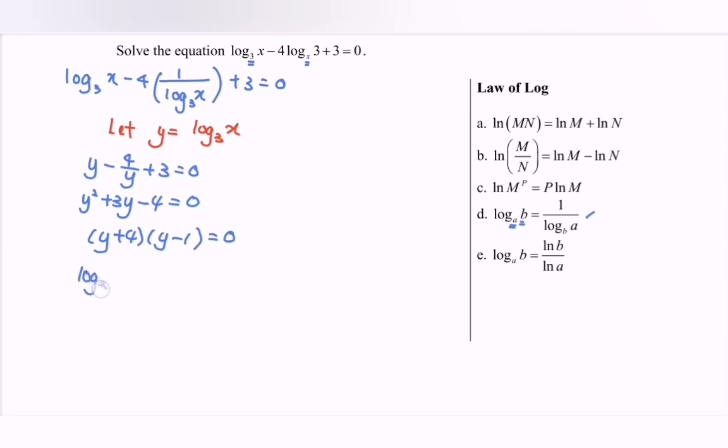So log base 3x equals negative 4, and log base 3x equals 1. Remember, this is what we call the log form. We have to change it to indices form. So we have 3 to the power of negative 4, so x equals 1 over 81.